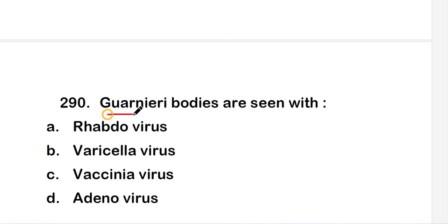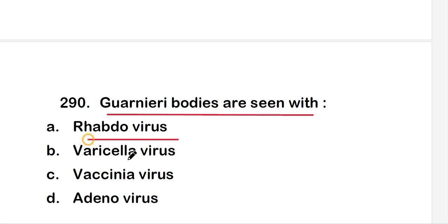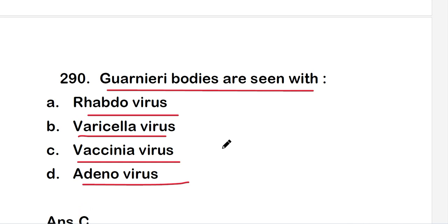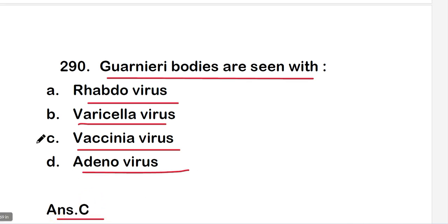Next question: Guarneri bodies are seen with rhabdovirus, varicella virus, vaccinia virus, or adenovirus? The right answer is option C, vaccinia virus. In vaccinia virus, Guarneri bodies can be observed.